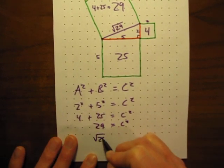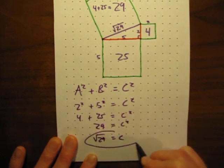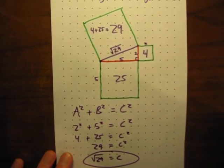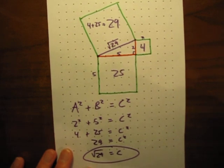Or the square root of 29 is equal to c. So I used the formula method work just as well. Either way will work, but that's how you can get the length of a diagonal line.